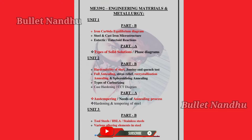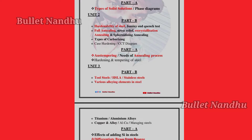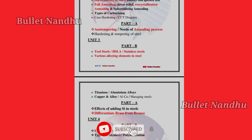Let's see the full annealing concept — that's a little bit important. In Unit 3, we will cover the effects of adding silicon in steel, the difference between brass and bronze which is very important, and stainless steel in Part B.